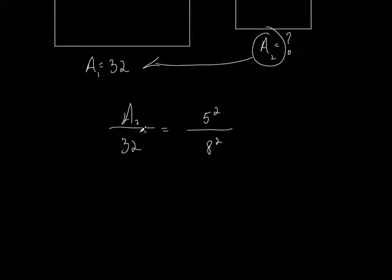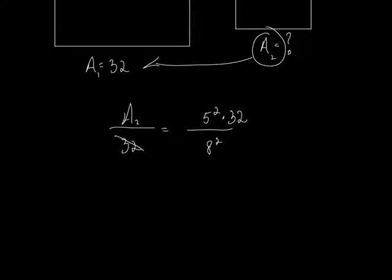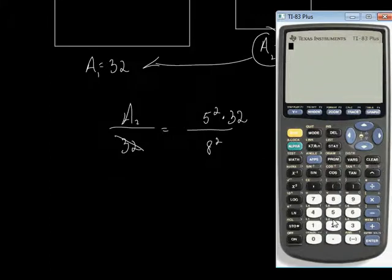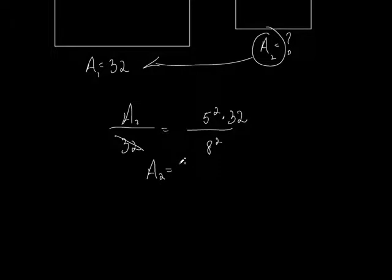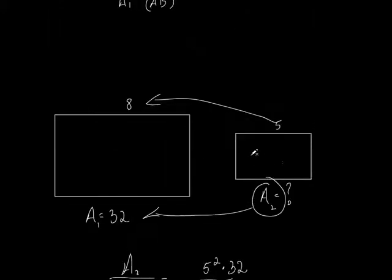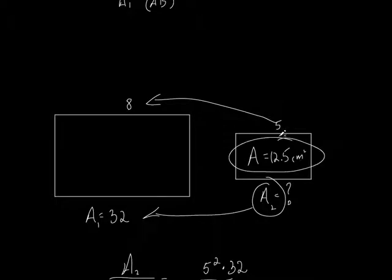With that said, it's really simple to solve for A2. How do you get A2 by itself? Multiply by 32. So you multiply that by 32, plug it into your calculator, and you get your answer. It's 5 squared — which is 25 — times 32, divided by 8 squared which is 64. And there you go: 12.5. So the area of that second rectangle is 12.5 square centimeters.